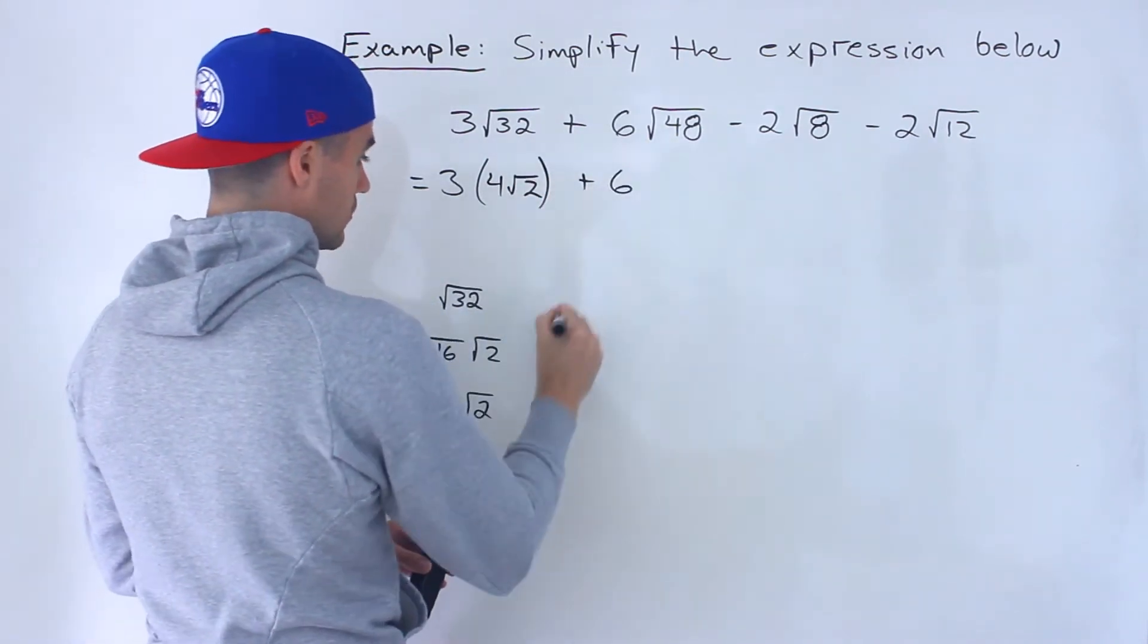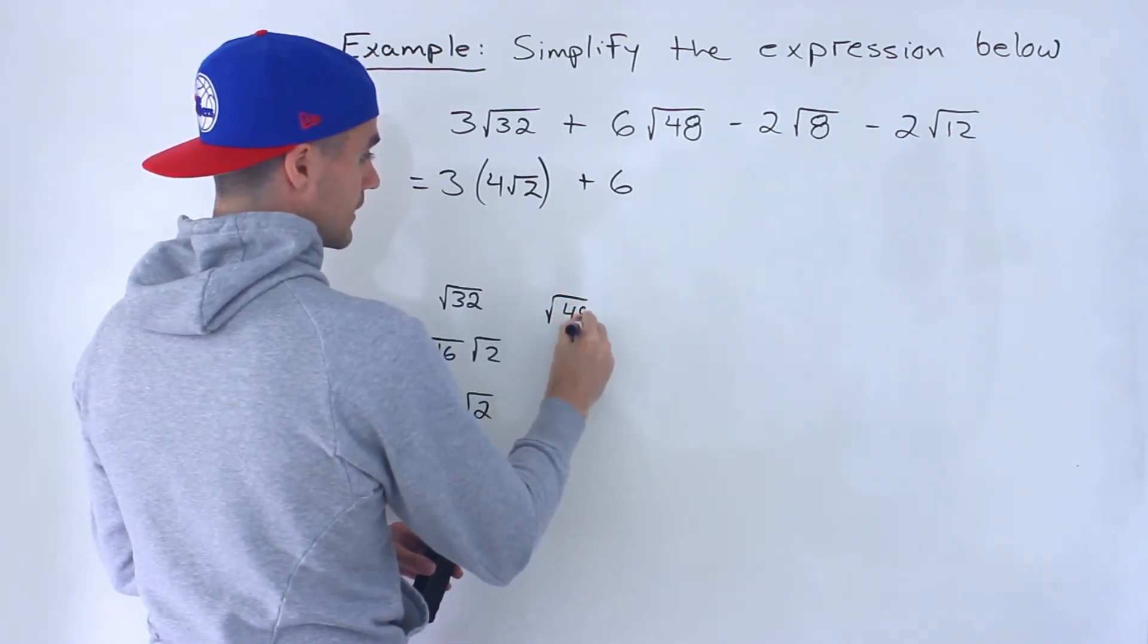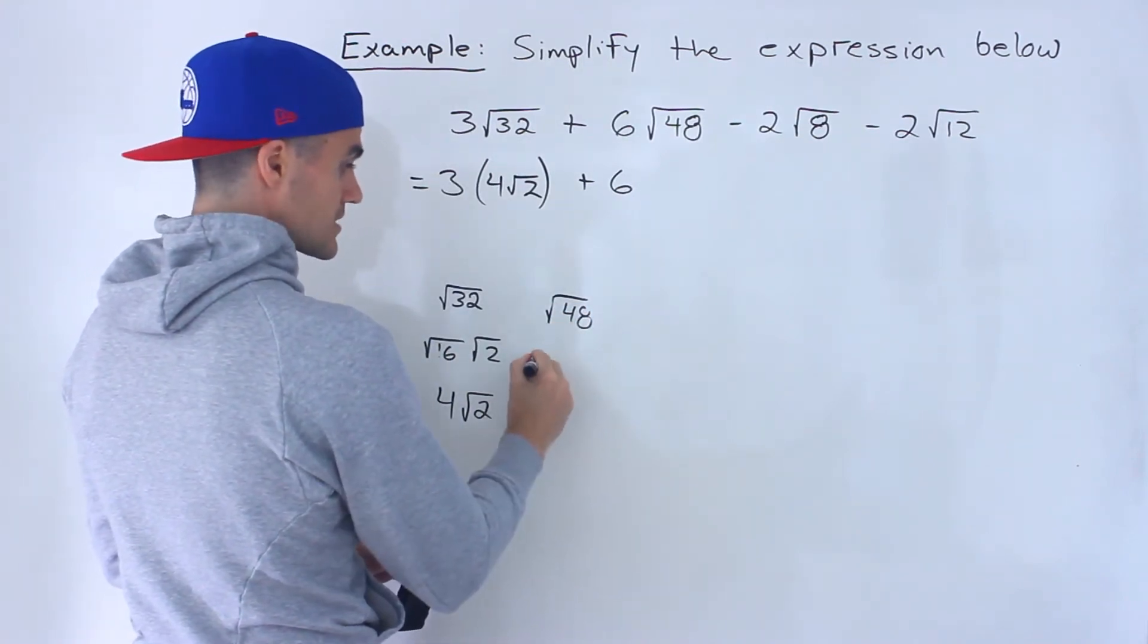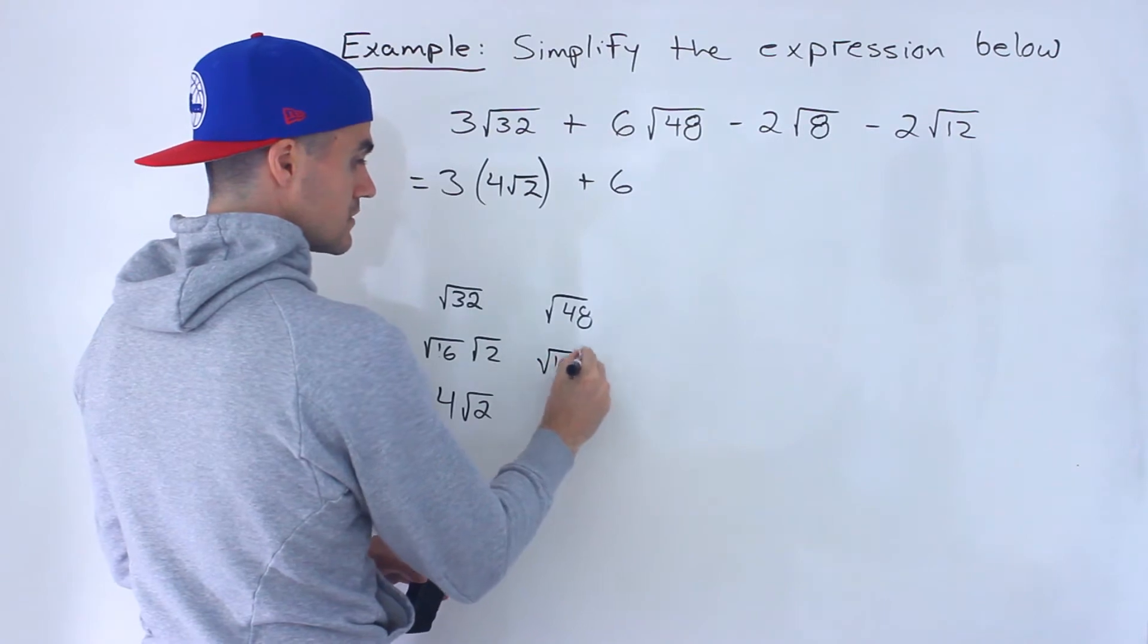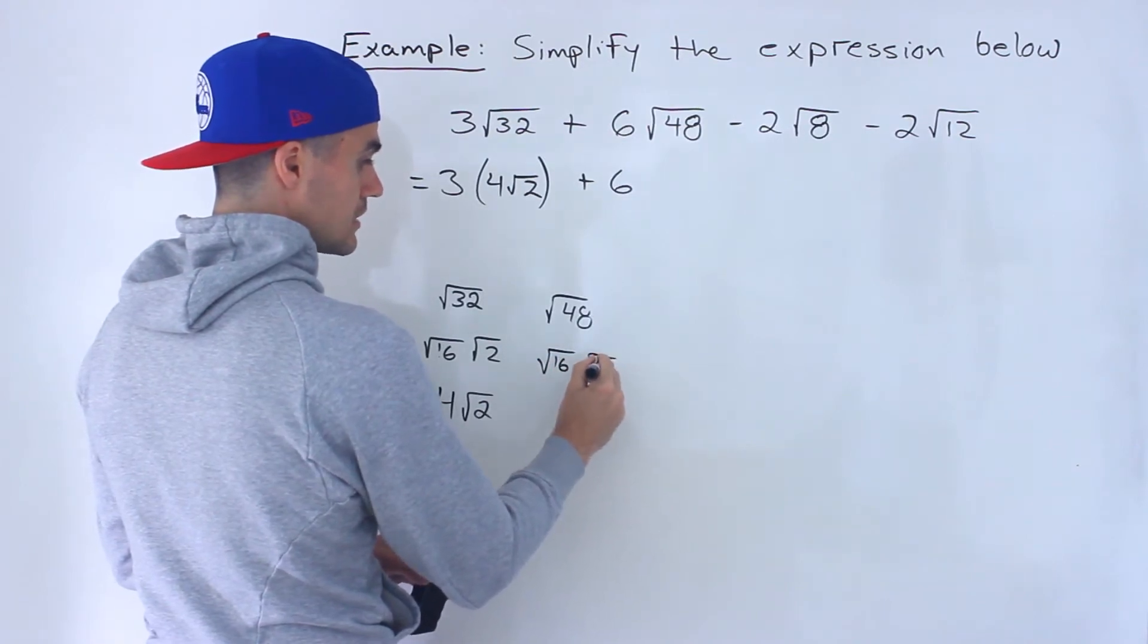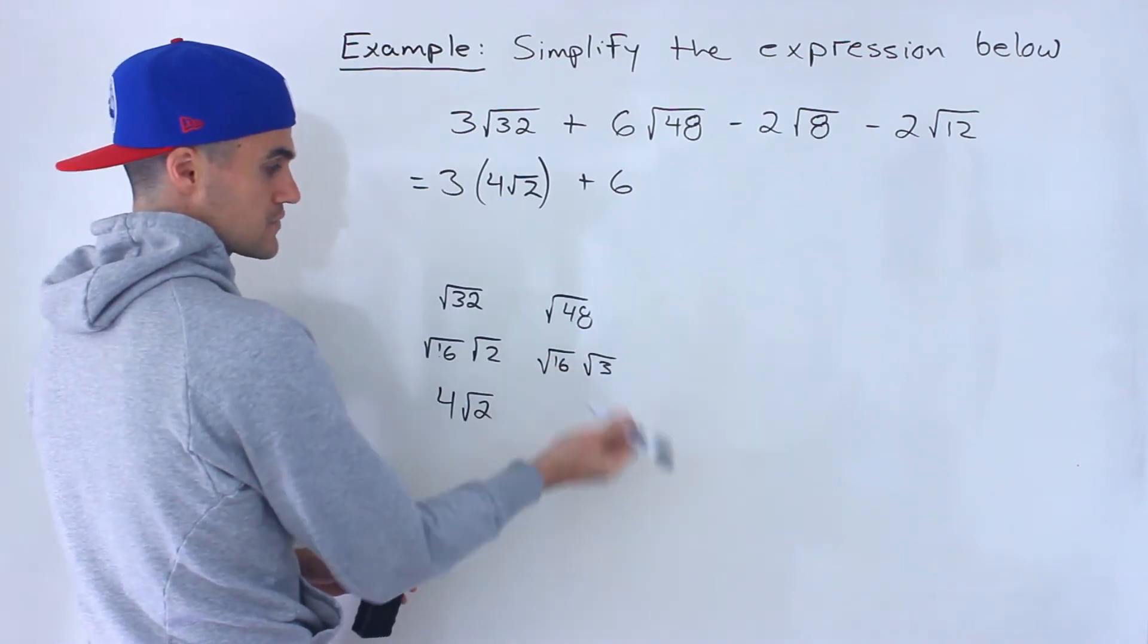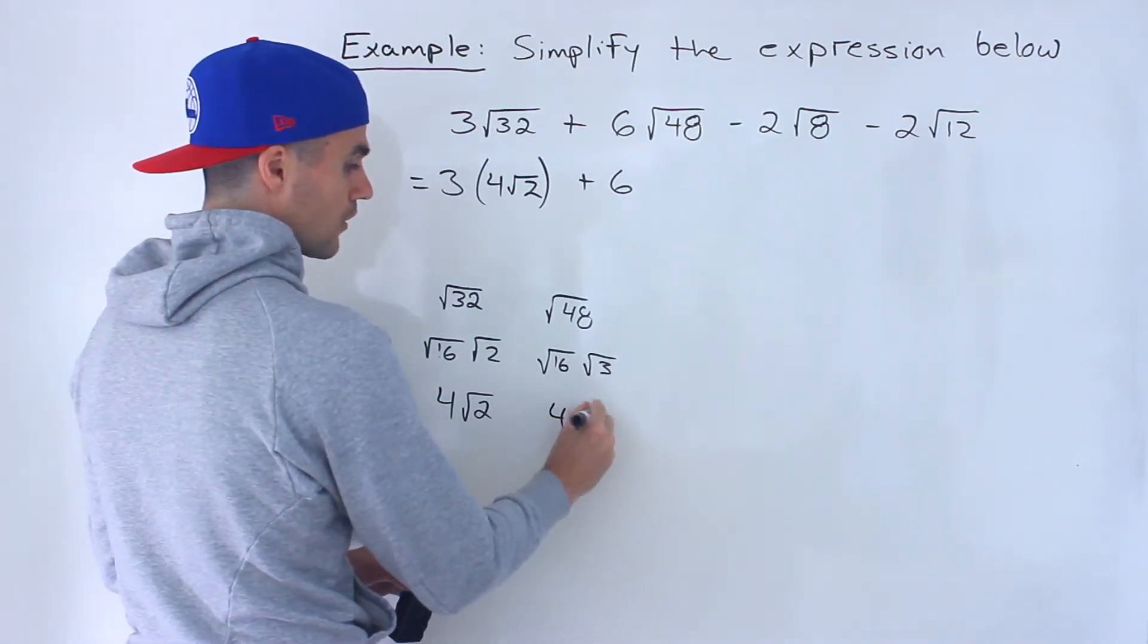And same thing here, root 48, what is that going to simplify to? Well notice that 16 would go into that as well. So we could take this and do root 16 times root 3. 16 times 3 is 48, and this would end up being 4 root 3.